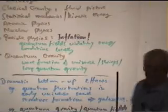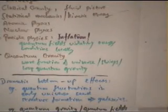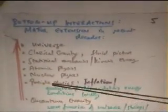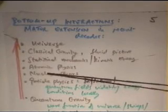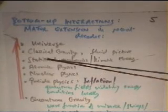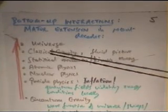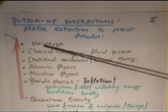And so, bottom-up effects in cosmology, this is what a lot of cosmology is about. It's really very dramatic. And to put this more generally, what you've got in the bottom-up interaction, you've got quantum gravity underlying particle physics, underlying nuclear physics, underlying atomic physics, underlying statistical mechanics, kinetic theory, classical gravity, the fluid picture, the universe.